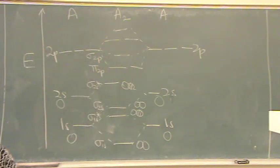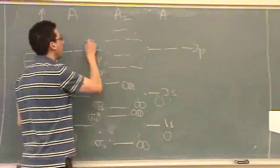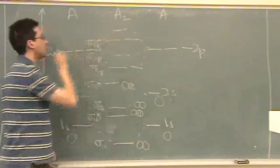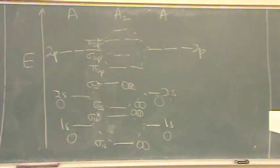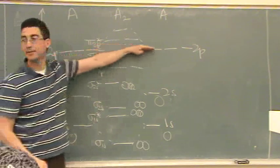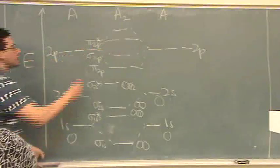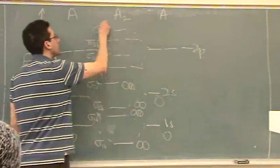Sigma 2p. Sigma because there's only one line. Pi 2p star, the anti-bonding, because there's two lines. And it's a star because it's above the midline, this midline right here.